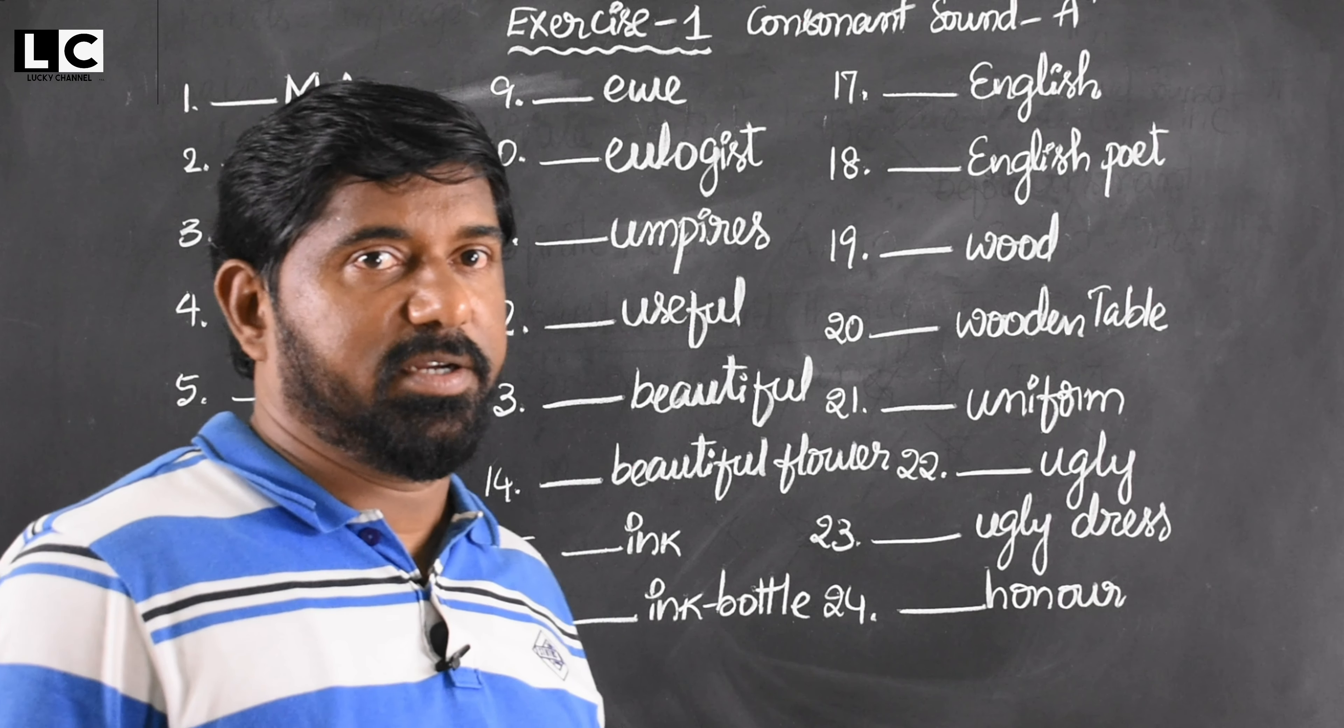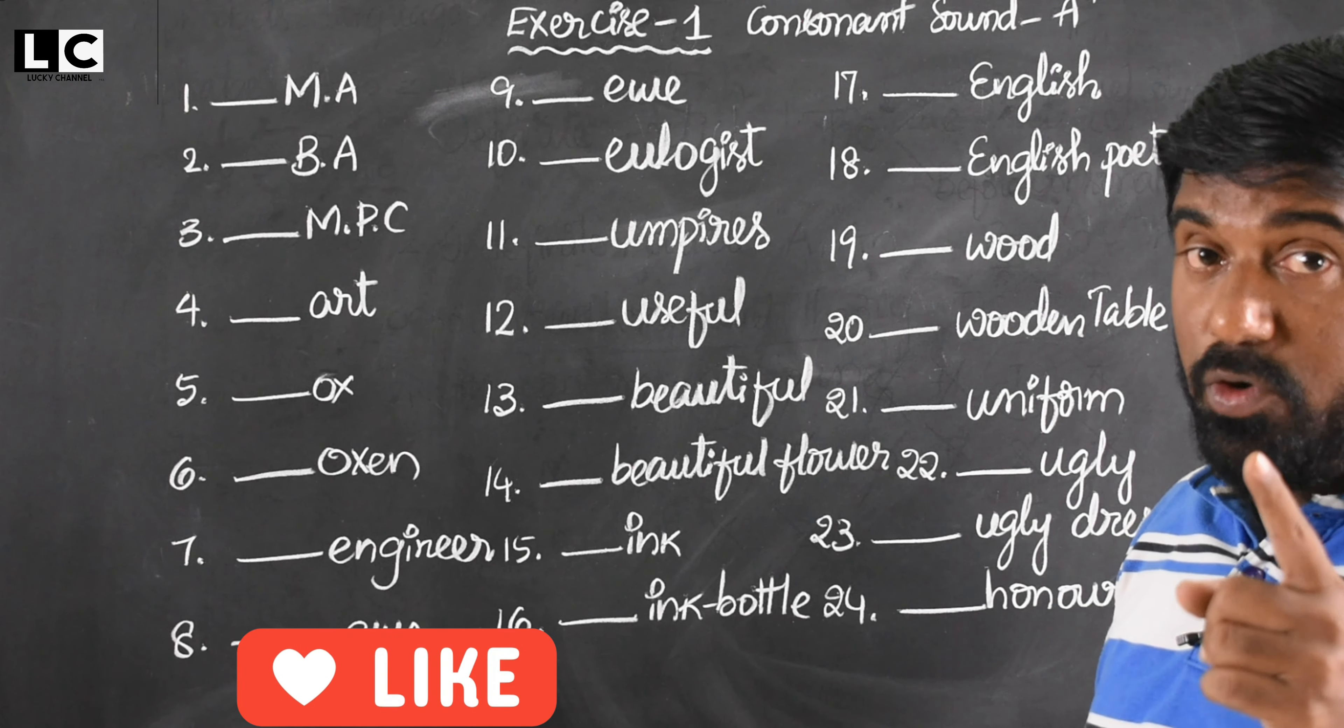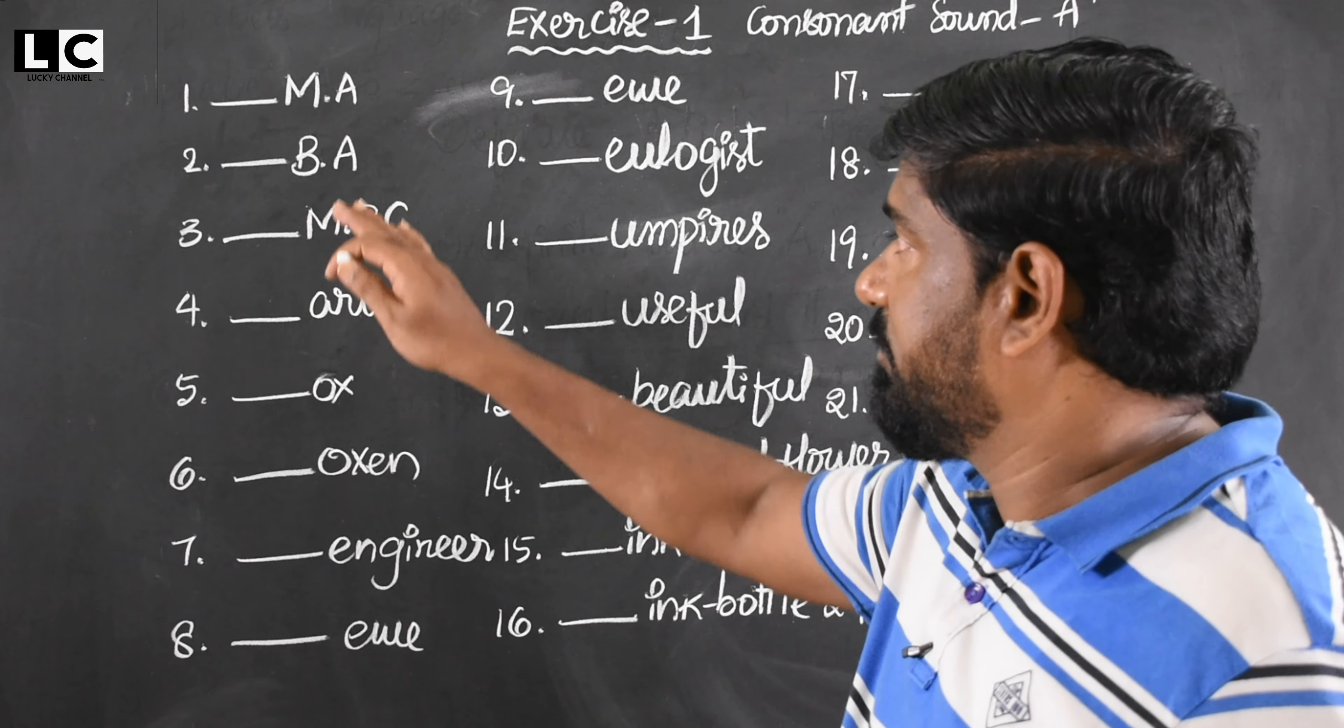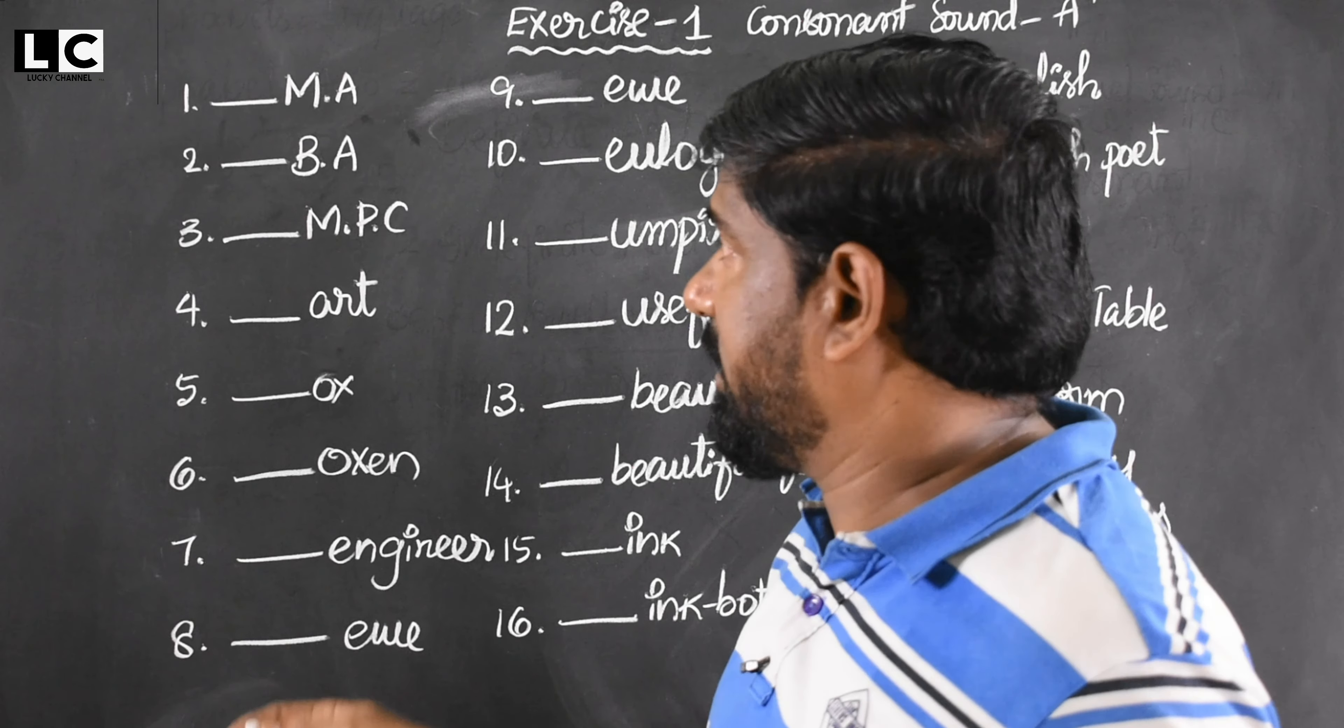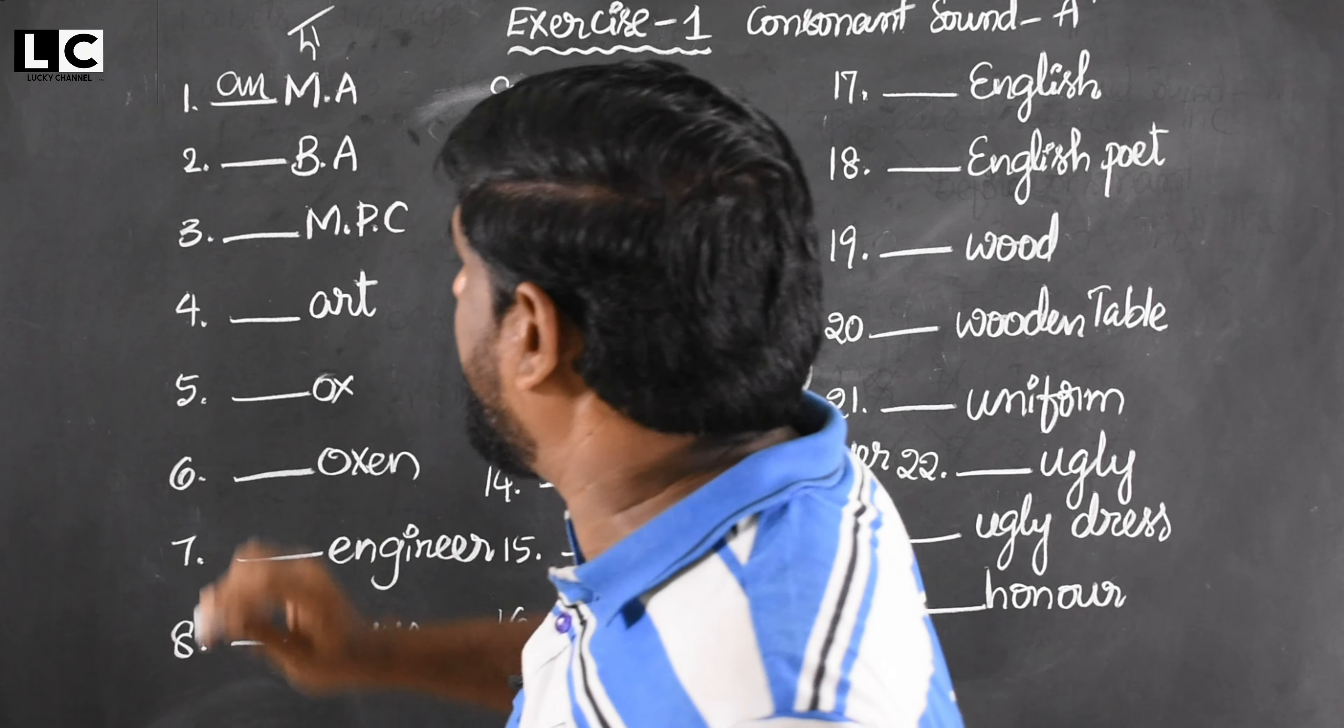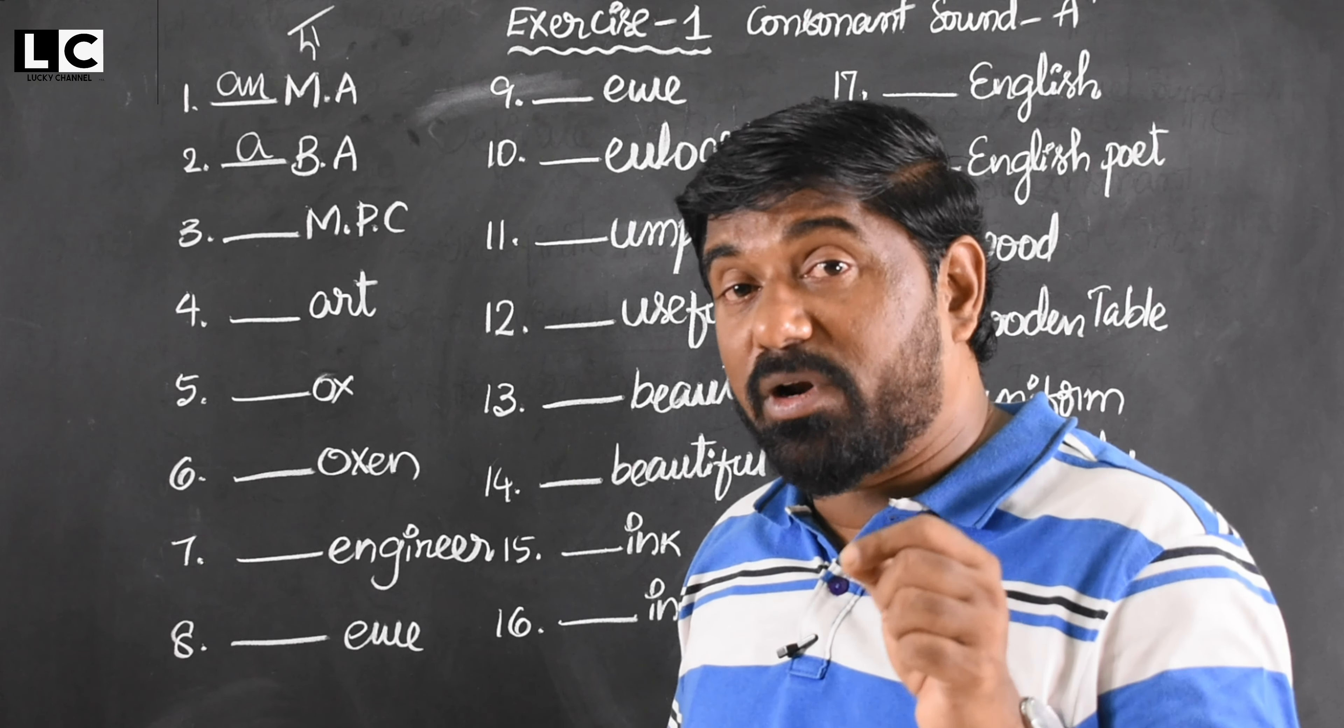For example, this is M.A. First sound is am - a. A is vowel, so what article is required? An. An M.A. B.A. - first sound is ba, consonant, so article is a B.A. M.P.C. - it's a group, mathematics, physics, chemistry combination. That type of combination is considered as plural, so you do not write any article. M.P.C. is not required any article, it's a combination. But degree is required article.